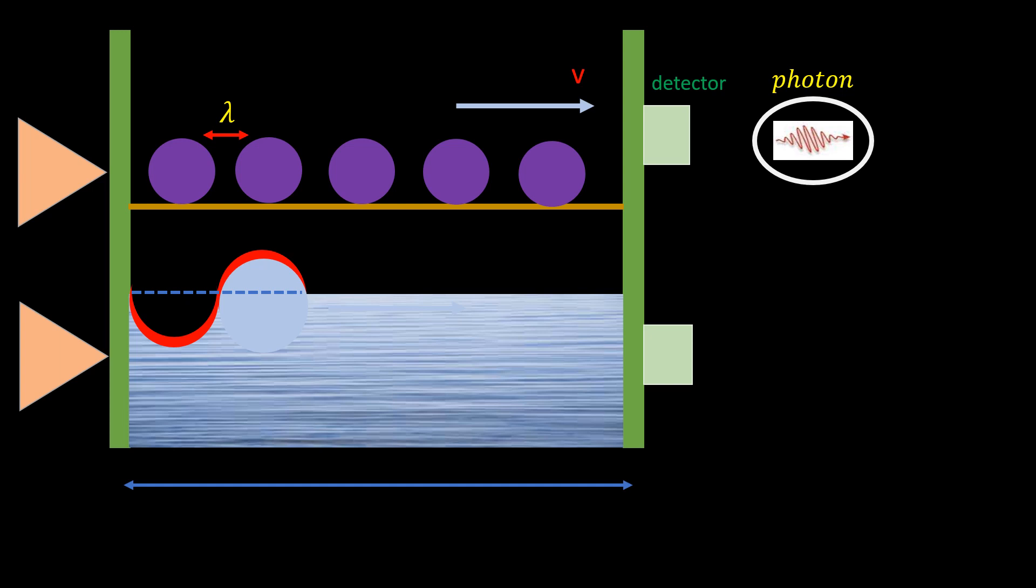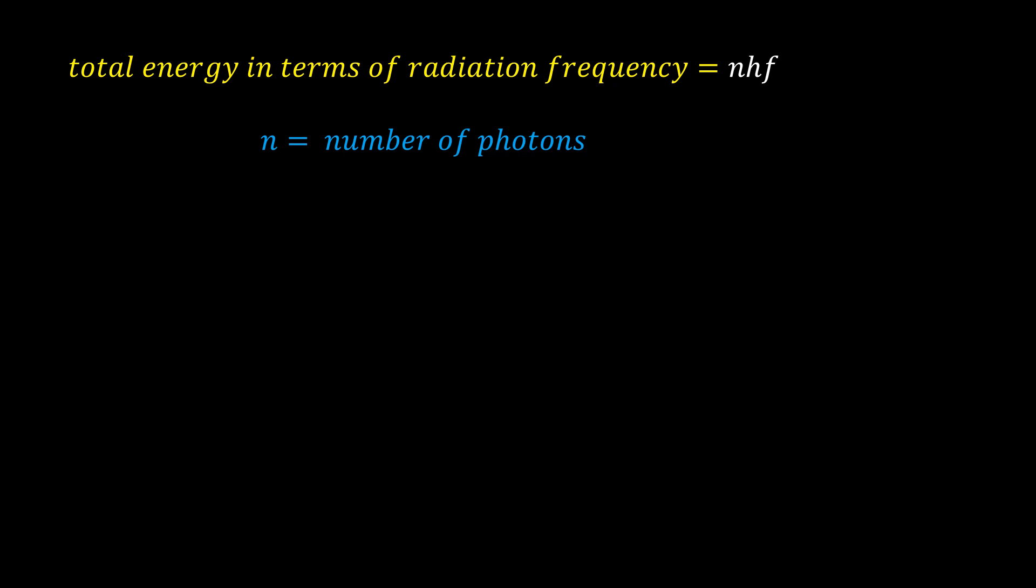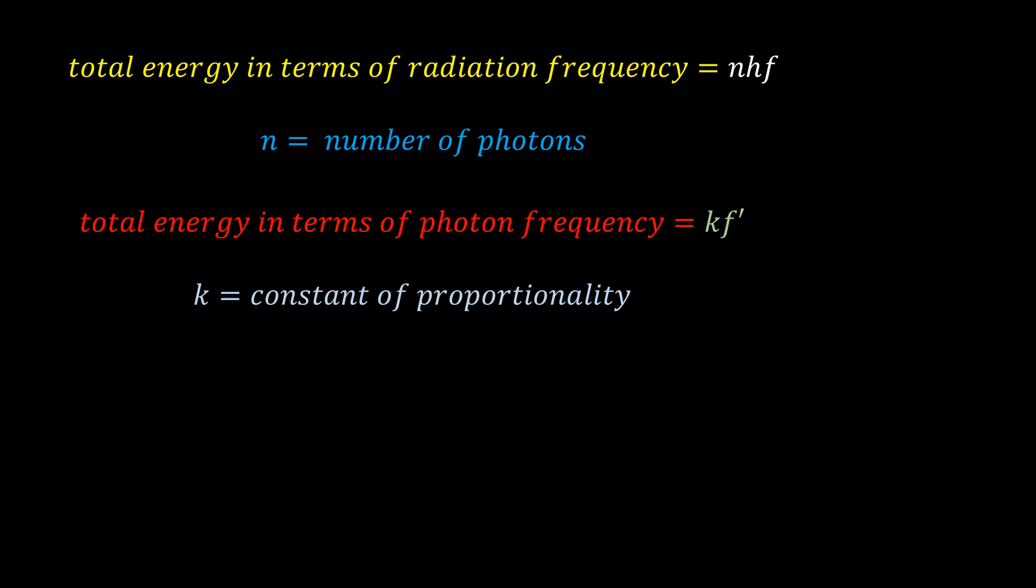Note that in this situation, there are two frequencies involved. That is, the frequency of the light radiation and the frequency of the photons. The frequency of the photons here stands for how many photons pass a certain point in a given time. While the light or radiation frequency is the frequency of the radiation that makes up the photon.